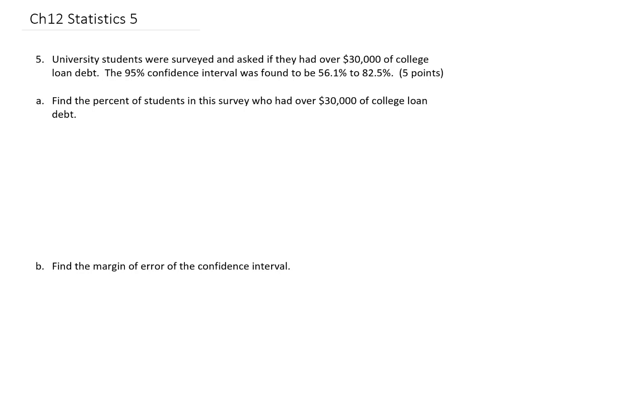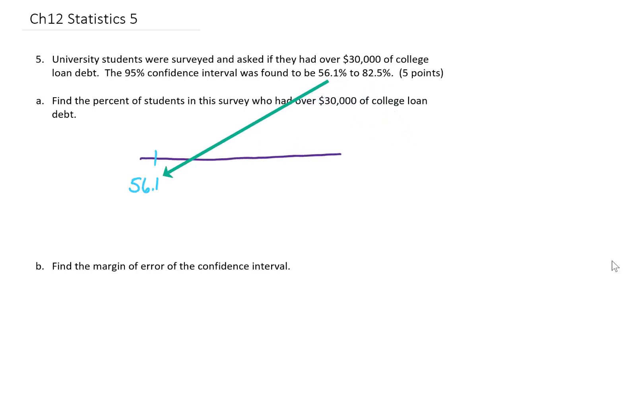We surveyed university students and asked if they had over $30,000 in college debt. The 95% confidence interval we came out with was 56.1% to 82.5%. If we draw our confidence interval, it goes from 56.1% all the way up to 82.5%. If we want to find the percent of students that were found in this survey who had over $30,000 in college debt,